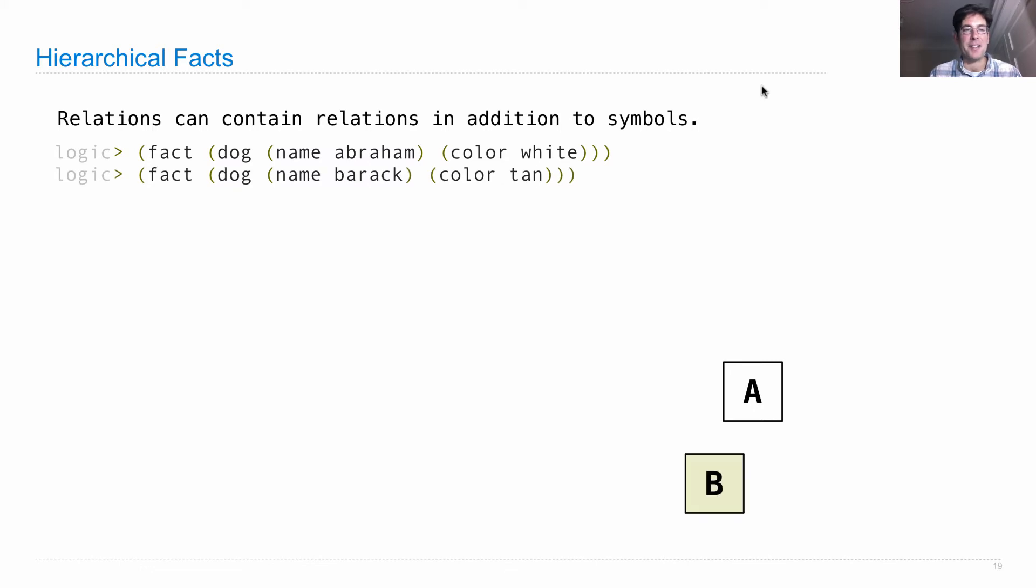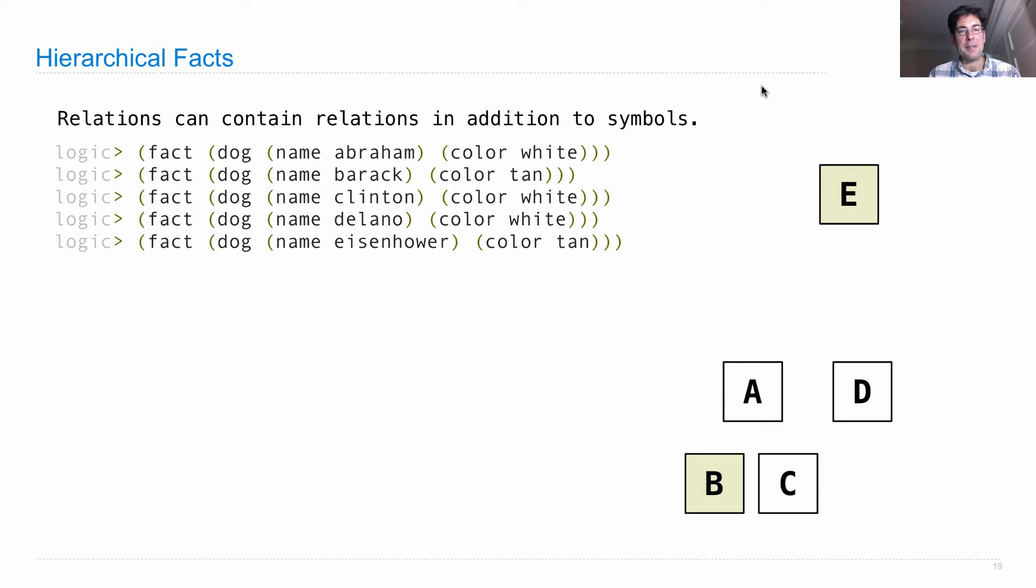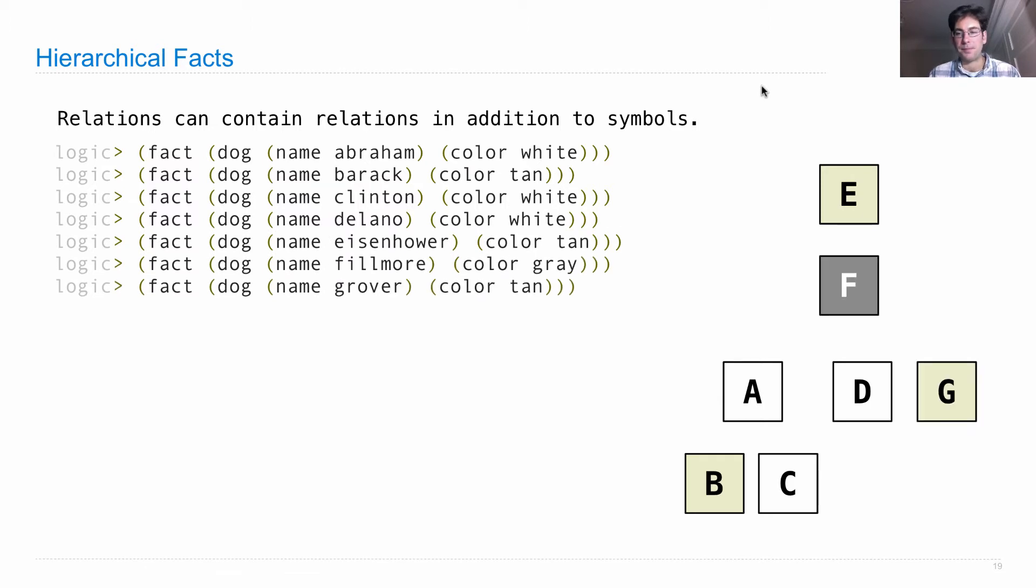And I'll have three colors of dogs. So I have a tan dog, another white dog, another white dog, another tan dog, and let's say I also have gray dogs. So I still have Abraham, Berhach, Clinton, Delano, Eisenhower, Fillmore, Grover, and Herbert.